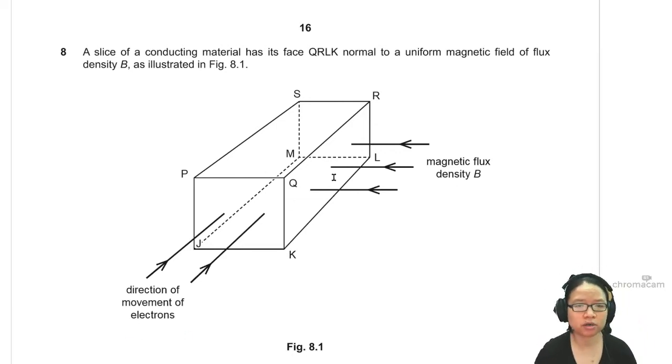In this question 8, we are going to look at something about the Hall effect, but the orientation is slightly different than what we are used to. In your notes or normally in textbooks, the magnetic field is going down from the top. This one, they choose to shoot it in from the side, but you'll be right, it'll be okay.